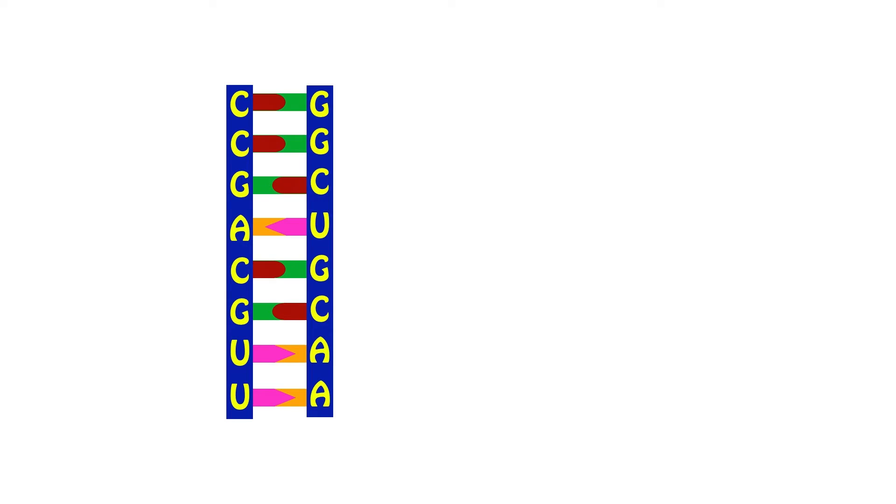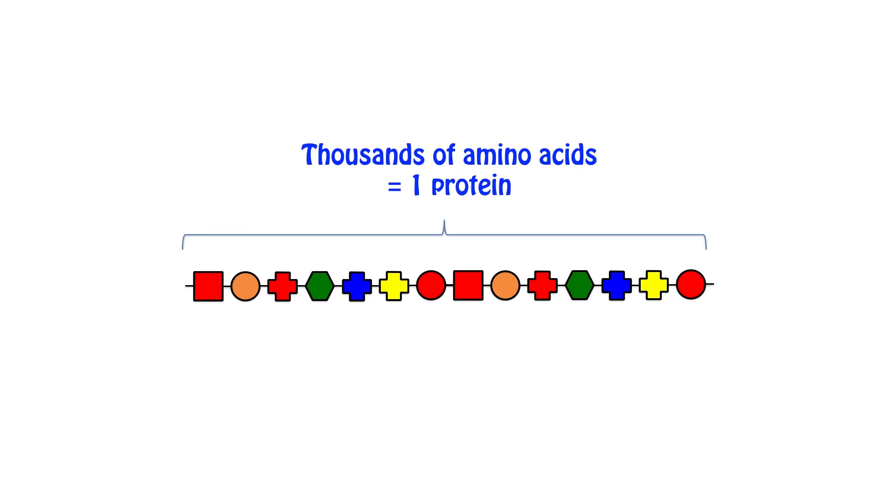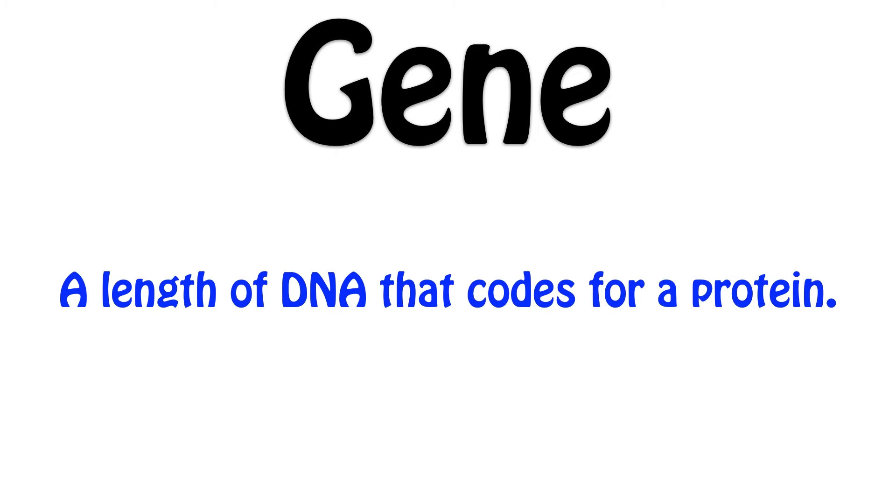RNA will then leave the nucleus and go to an organelle called a ribosome. Now, what ribosomes do is they kind of move along the strip of information, along this code, and every so far they go, they attach a new molecule to a chain. These molecules that they're attaching are called amino acids. And as these amino acids build, they form a chain which might involve thousands and thousands of these things. And the specific combination of them and the specific amino acids that are present determine which protein is made. To summarize it as a simple definition, a gene is a length of DNA that codes for a protein.